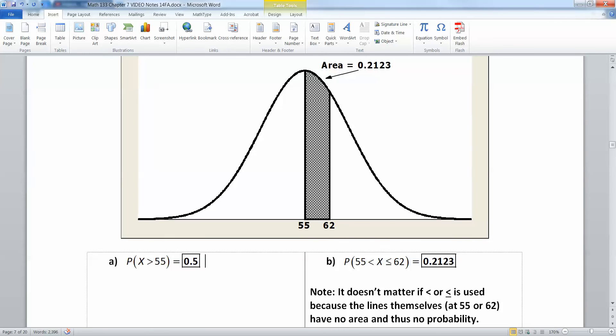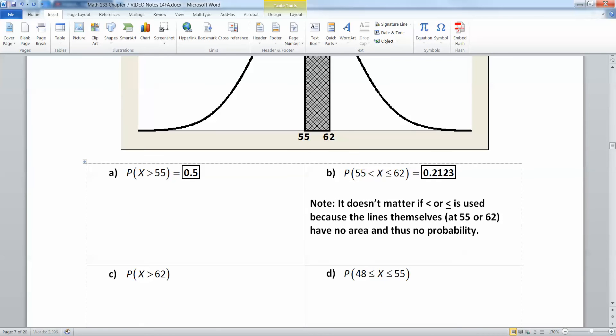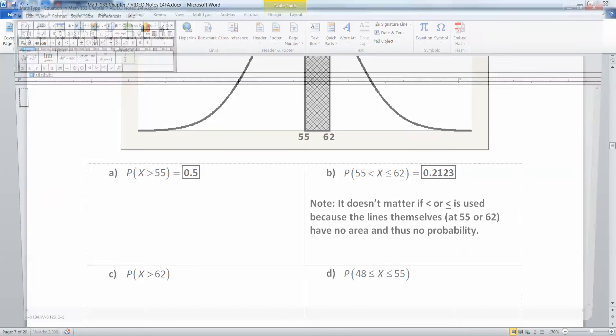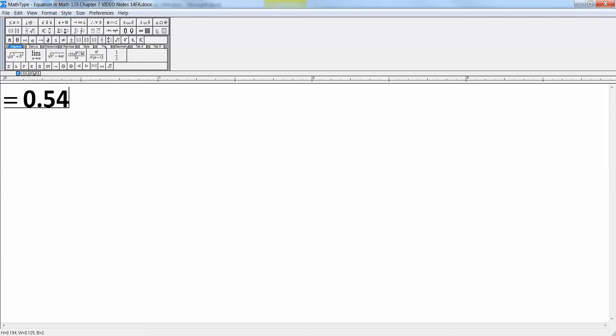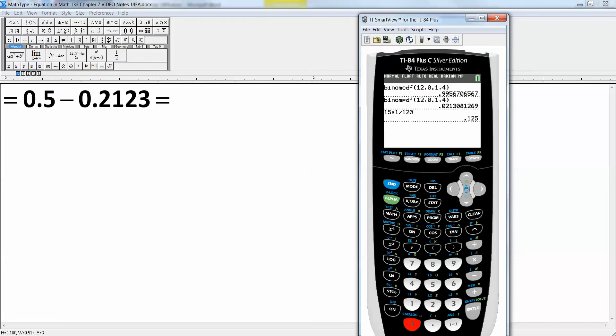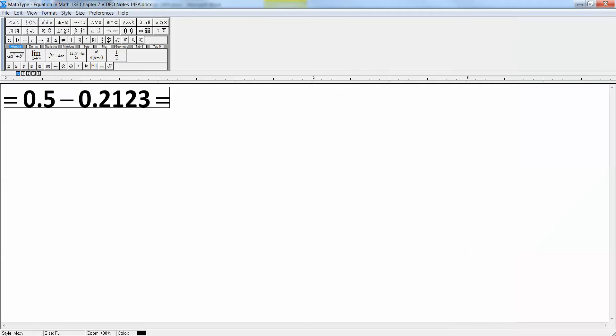Then you know this little gray region right here is 0.2123, so doesn't it make sense that the right hand region over here is 0.5 take away 0.2123? Write that out and it'd be 0.5 take away 0.2123 which would be equal to 0.2877.